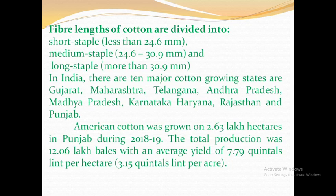The fiber length of cotton is divided into short staple, medium staple, and long staple. Short staple is less than 24.6 mm. Medium staple is 24.6 mm. Long staple is more than 35.9 mm.